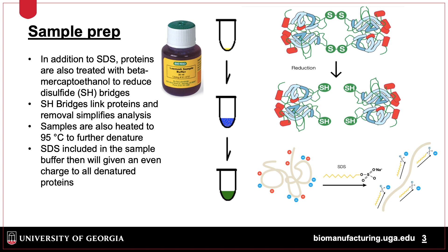In addition to SDS, beta-mercaptoethanol or other reductants are added, along with heating the sample to 95 degrees Celsius, usually for 5 minutes, to completely denature the protein. This further normalizes the protein, so along with charge, the proteins, being denatured, don't form unusually wide or compact structures.